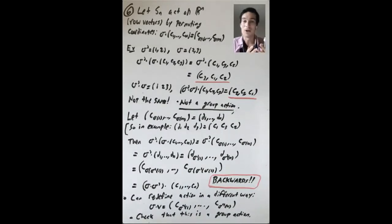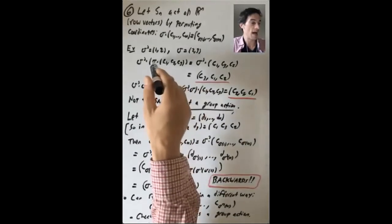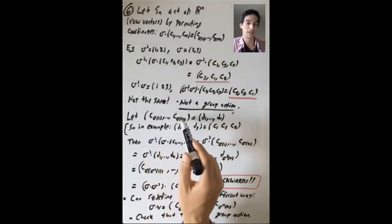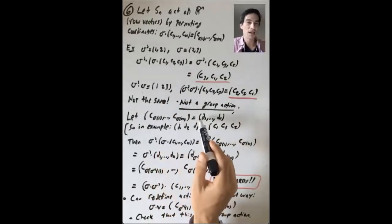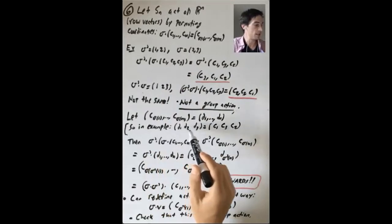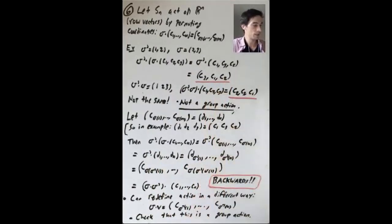So this example, I'm going through it as kind of a warning that there are lots of reasonable looking functions from g cross x to x that you could write down that don't actually give group actions. You have to be a little careful. So let's look at what's actually going on here. If you stop at this point after you've acted on your vector by sigma, then you have (c sigma 1, c sigma 2, up to c sigma n). Let's call that (d1 up through dn). So in this example, d1, d2, d3 would be this vector up here, (c1, c3, c2).